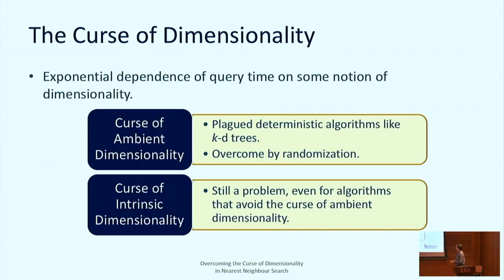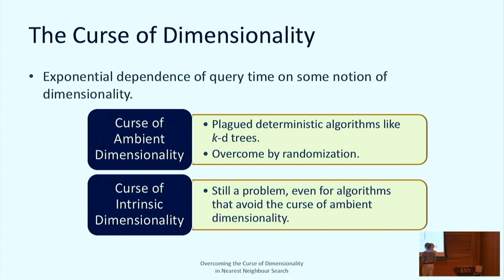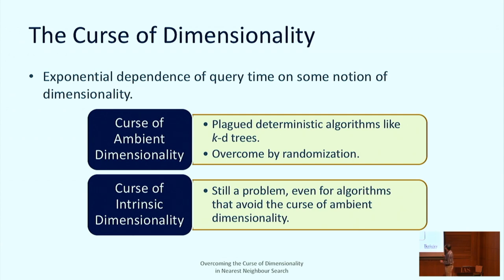There are actually two variants of the curse of dimensionality. The first is the curse of ambient dimensionality — running time exponential in the ambient dimension (the ordinary notion of dimensionality of the embedding space). The second is the curse of intrinsic dimensionality — exponential dependence on the intrinsic dimensionality, which you can roughly think of as the dimensionality of the manifold that generates the data. While the curse of ambient dimensionality has been overcome using randomization, even after applying randomization you still get exponential dependence on the intrinsic dimensionality, and even the newer methods cannot go around this.